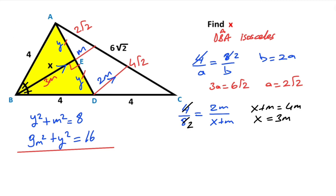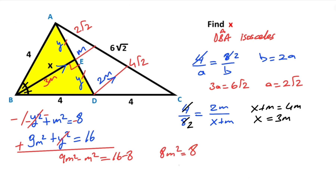If you multiply the first equation by minus one and add the equations together, notice these terms cancel. So 9M squared minus M squared equals 16 minus 8. Therefore 8M squared equals 8, so M squared equals 1, meaning M equals 1 unit. Notice that X equals 3M, so X equals 3.